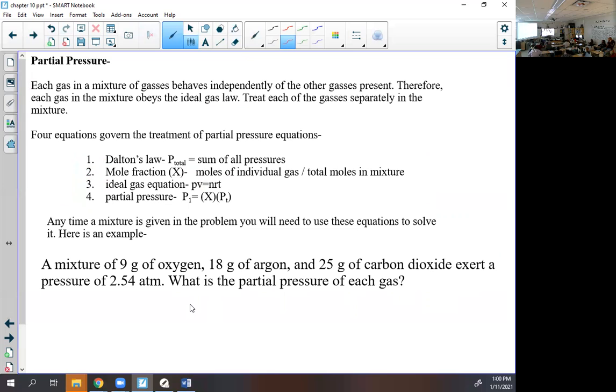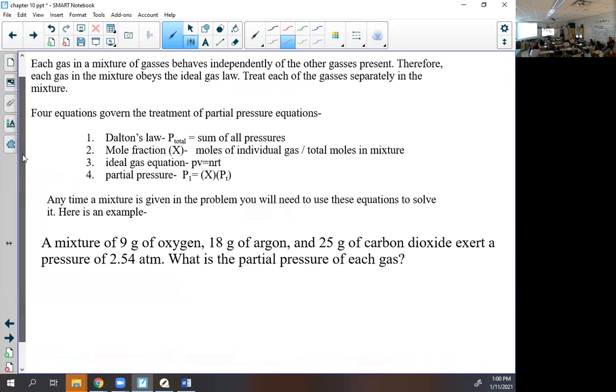Here's an example. A mixture of 9 grams of oxygen, 18 grams of argon, and 25 grams of carbon dioxide exert a pressure of 2.54 atm. What is the partial pressure of each gas? It wants partial pressure, so I need equation number four, which means I need X times P total. Which means I need X, which means I need equation number two first. Then we need to know the pressure total.